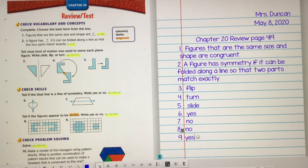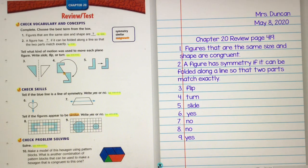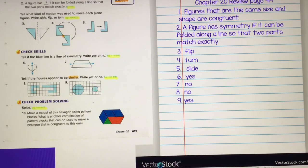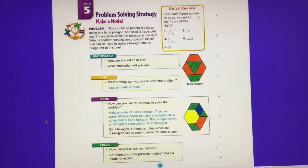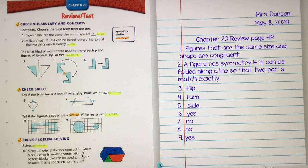Now number ten, that kind of gets a little tricky because you guys actually don't have these shapes at home with you. So make a model of this hexagon using pattern blocks. What is another combination of pattern blocks that can be used to make a hexagon that is congruent to this one? So if you go to page 416, you can see all these kinds of different shapes that you would actually have. We have triangles that are green, the hexagons are yellow, the trapezoids are red, and the rhombuses are blue. So you guys don't have those in your hands right now, but I do. So we're going to kind of take a look at number ten. What could it be? So I'm going to actually make that on my desk, and then I'm going to start another video, and we're going to show what we can put over top of it.